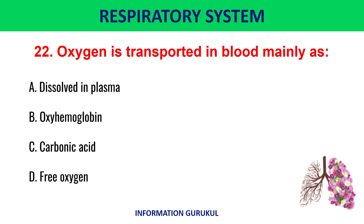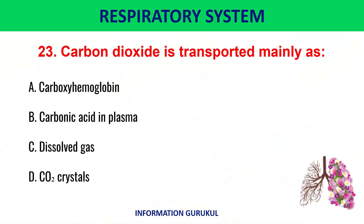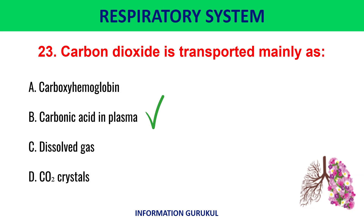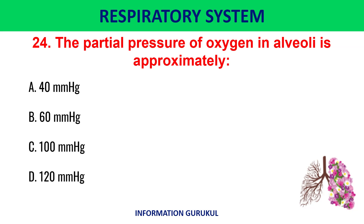Oxygen is transported in blood mainly as oxyhemoglobin. Carbon dioxide is transported mainly as carbonic acid in plasma. The partial pressure of oxygen in alveoli is approximately 100 mmHg.